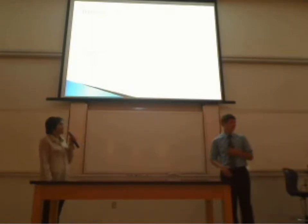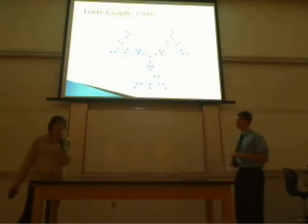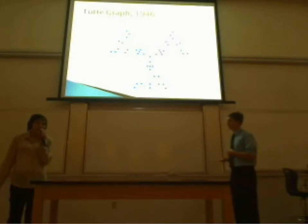In the corner, you can see an example of a pretty simple graph, but they can get a little more complicated, like the Tutte graph, which was drawn in 1946. If you look at the graph, you can see that the blue dots are known as vertices, and the black lines that connect them are known as edges.